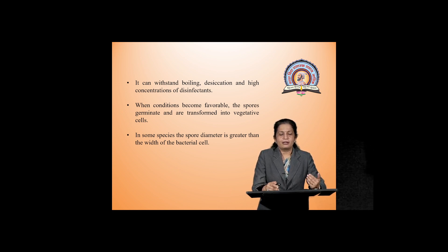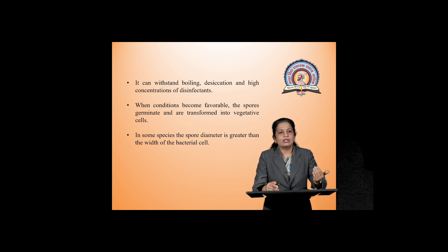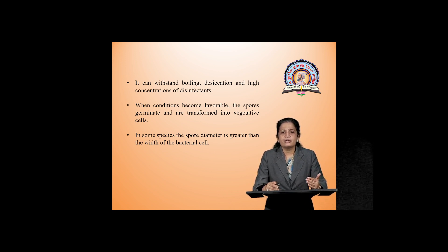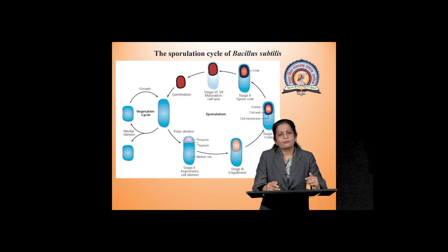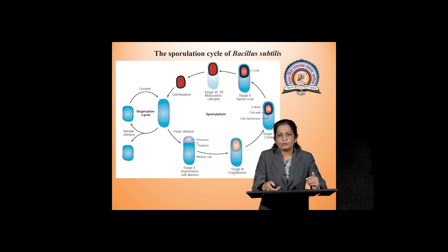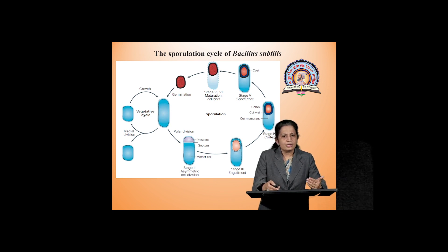When favorable conditions return, spores will germinate and are transformed into vegetative cells. In some species, the spore diameter is greater than the diameter of the bacterial cell — larger size spores can be formed. Here we can see the cycle of sporulation: first polar division takes place, then prespore is formed, septum is formed, the larger part is known as the mother cell. In stage 3 there is engulfment; in stage 4 cortex formation; then cell wall layer, two membrane layers, and finally formation of the coat. When the spore matures, the cell lyses and the spore germinates. When favorable conditions return, there is conversion of the spore into vegetative cell.